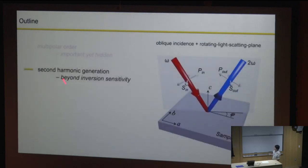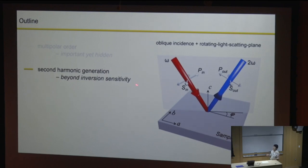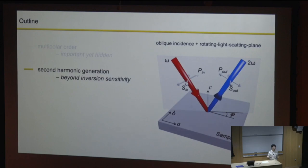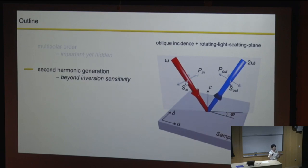After that, I will talk about our experimental technique, which is second harmonic generation. This technique has been around for many years and is known to detect breaking of inversion symmetry. I hope to highlight two more things about SHG: first, if we push the sensitivity, we can detect phase transitions that still have inversion symmetry, challenging the conventional wisdom; and second, for nonlinear optics, we can construct tensor fields in a special fashion that can directly couple into the multipolar order.